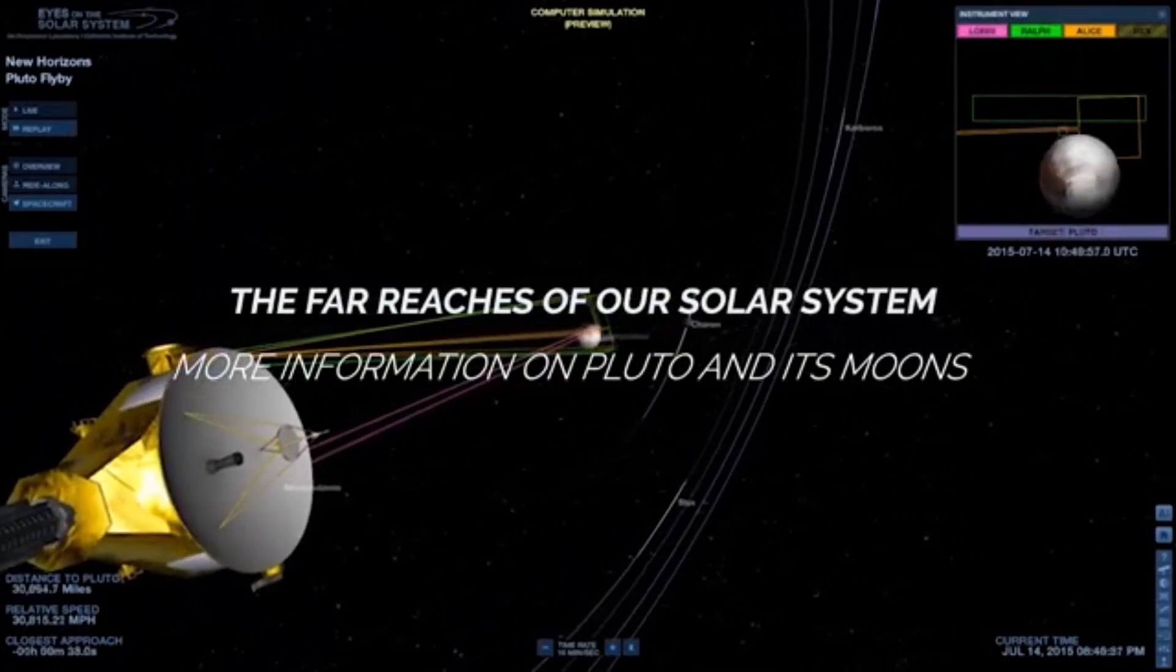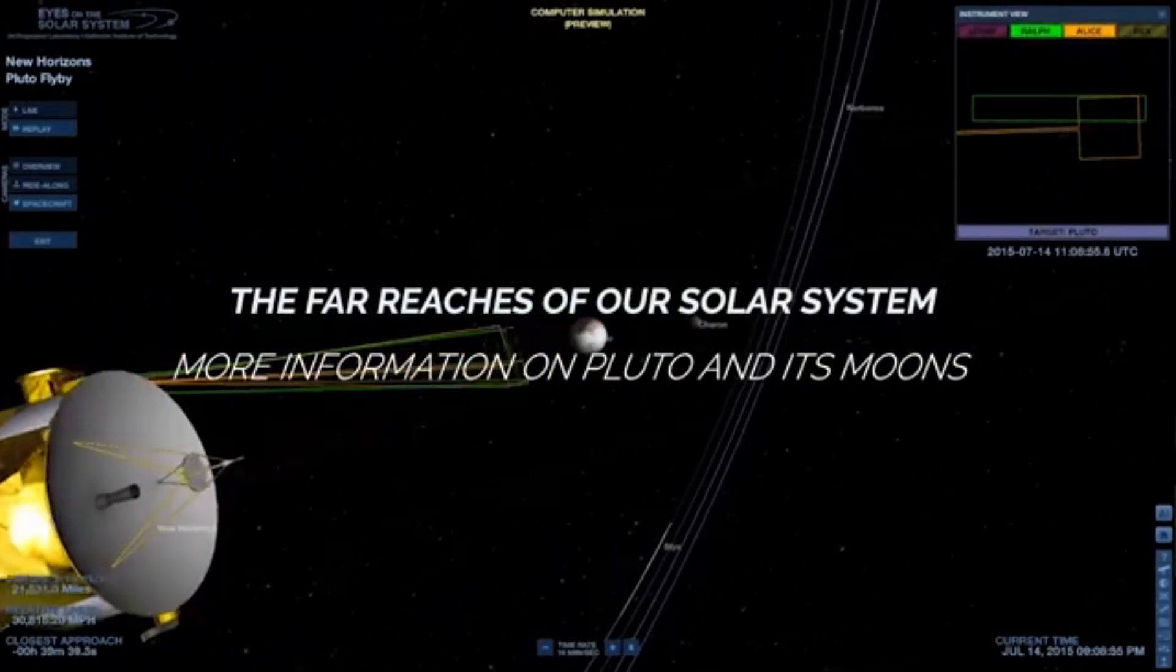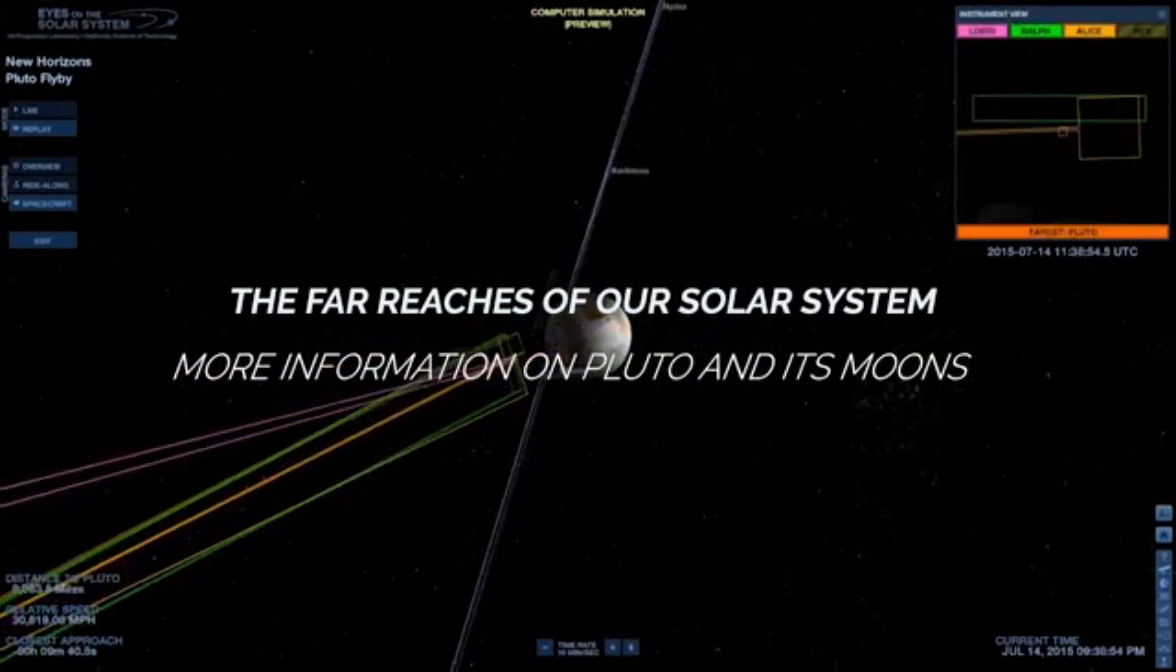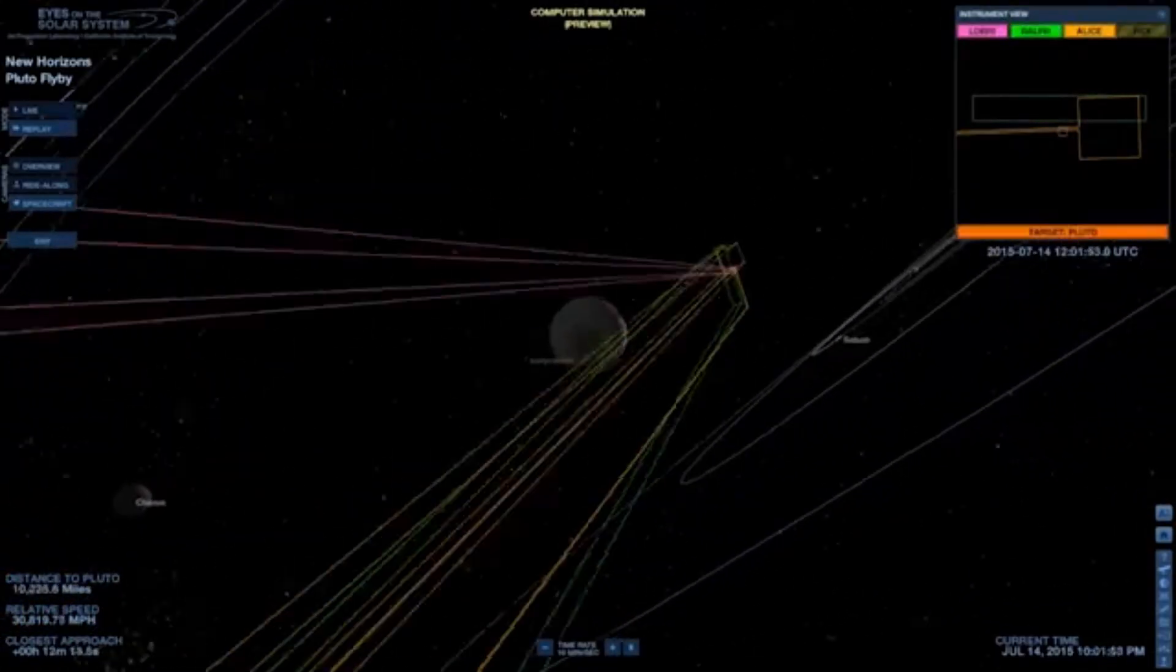Such technology would require mastering concepts that we are just beginning to theorize today. Nuclear fusion propulsion, laser sails, or even space warp engines. If these beings were to begin their journey into our system, Pluto would be the first central object they would encounter.